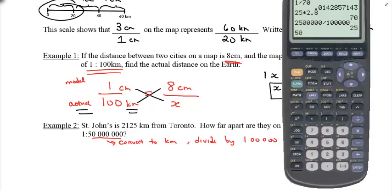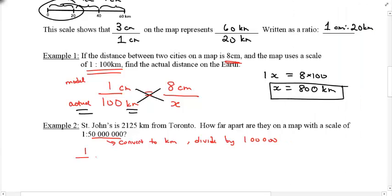50 million, so 1, 2, 3, 1, 2, 3, divide by 100,000, 1, 2, 3, 4, 5, and this is 500. So this is the same thing as 1 centimeter is equivalent to 500 kilometers on this particular map.